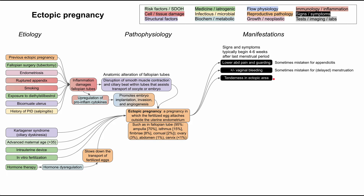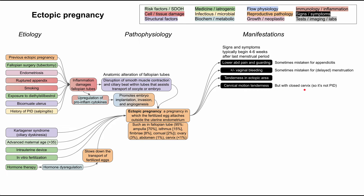Patients can have tenderness in the ectopic area — for instance, if it's in the fallopian tubes or ovary, it could present as adnexal tenderness on pelvic exam. Patients can have cervical motion tenderness. Normally when we think of cervical motion tenderness, we think of pelvic inflammatory disease. In the case of ectopic pregnancy, patients can have cervical motion tenderness with a closed cervix — that's how you differentiate it from PID, where you might have an open cervix with discharge. Enlarged uterus is another finding you might notice on pelvic exam.